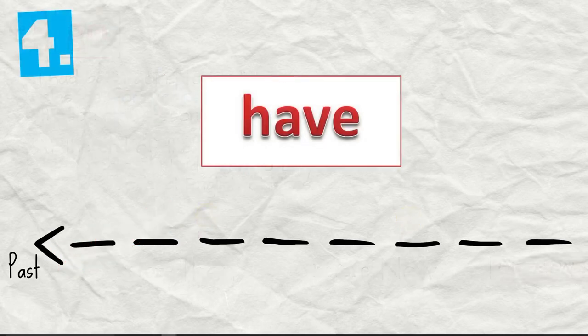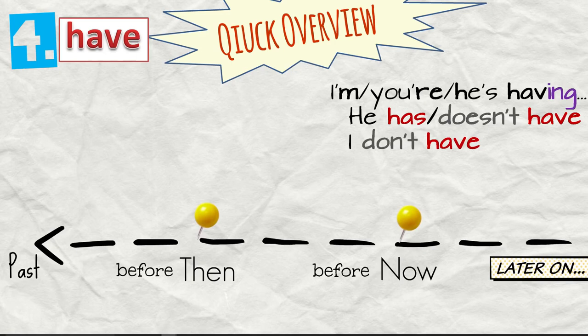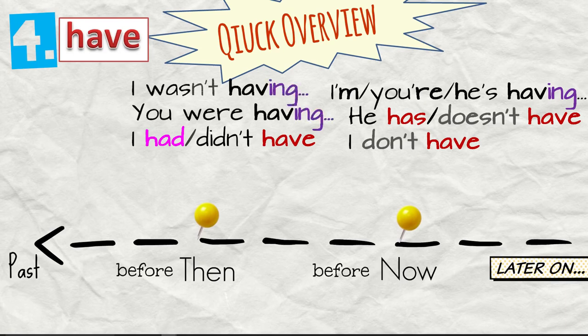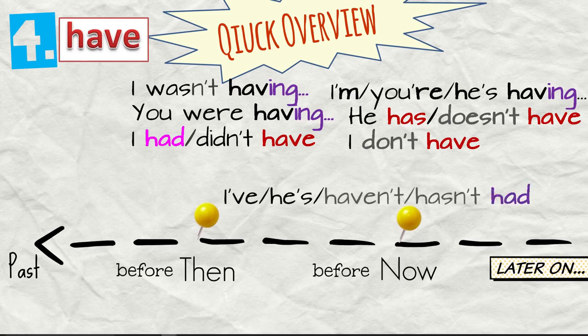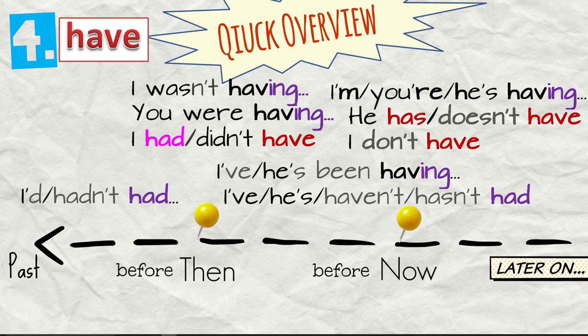Have. Quick overview. He has or he doesn't have. I have or I don't have. I'm having. You're having. He's having. I had or I didn't have. I wasn't having. You were having. I've had. He's had. Or the negative again. I haven't had. He hasn't had. Alright, then we have I've been having or he's been having. And I'd or I hadn't had. I'd been having.